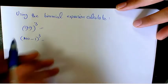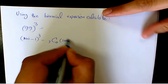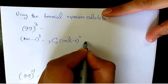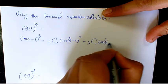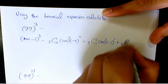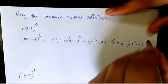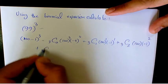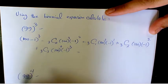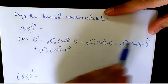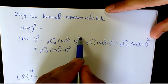So when we expand it, it becomes: 3C0 times 100 to the power of 3 times negative 1 to the power of 0, plus 3C1 times 100 to the power of 2 times negative 1 to the power of 1, plus 3C2 times 100 times negative 1 to the power of 2, plus 3C3 times 100 to the power of 0 times negative 1 to the power of 3. The coefficients are 1, 3, 3, 1, based on Pascal's triangle.